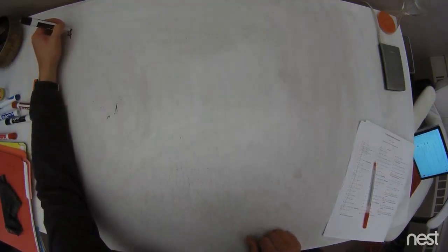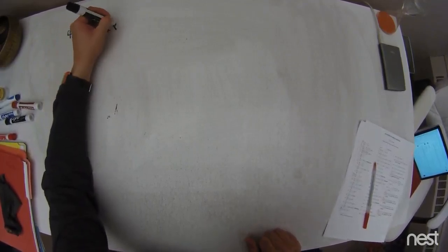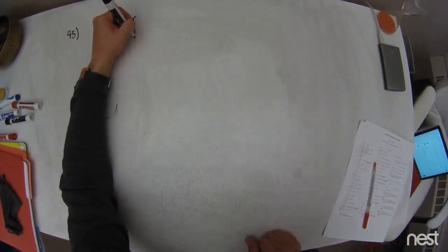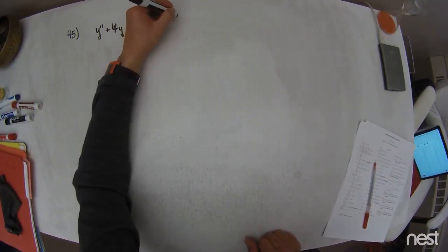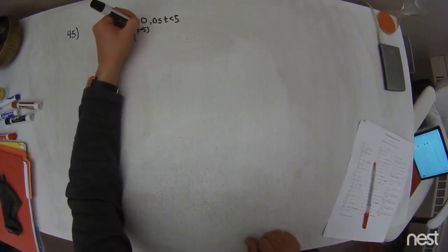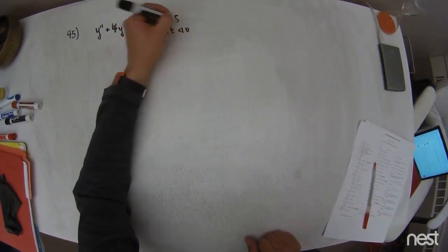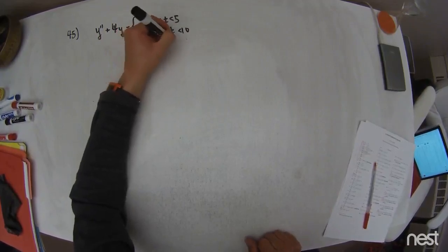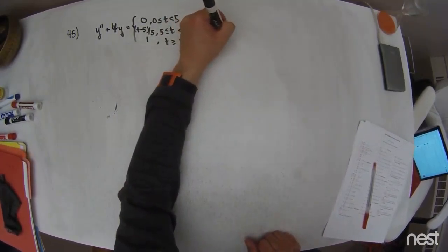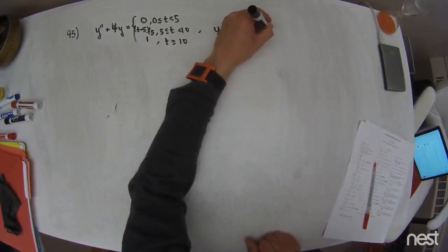I'm going to do problem number 45 from the list. This is y double prime plus 4y equals a piecewise function: it's 0 if t is between 0 and 5; it is (t minus 5) divided by 5 if t is greater than 5 but less than 10; and it is 1 for all t's greater than or equal to 10. I also know that y(0) = 0 and y'(0) = 0 as well.